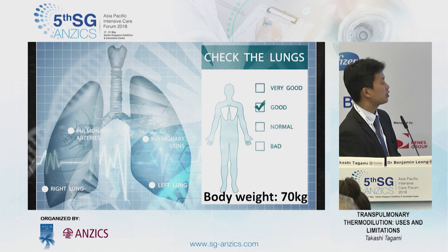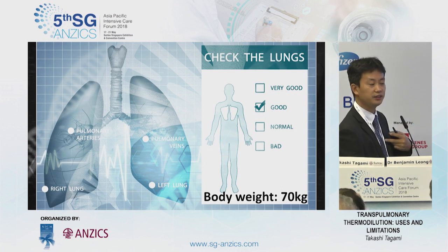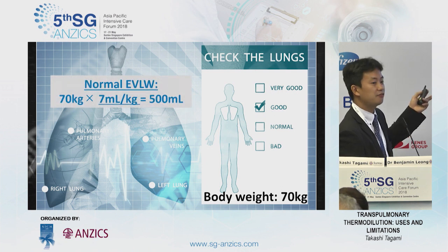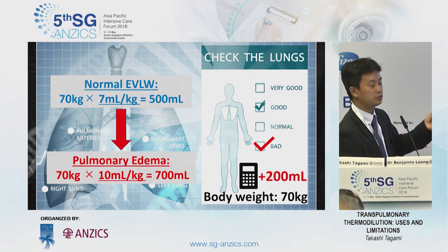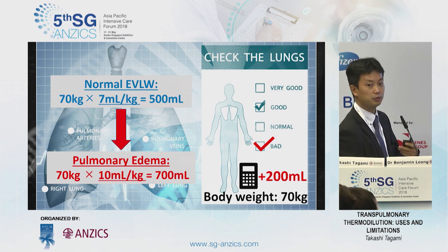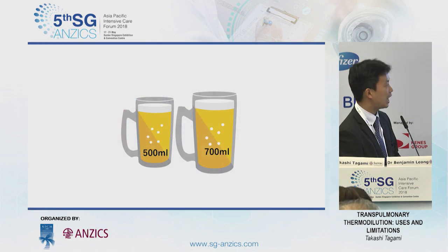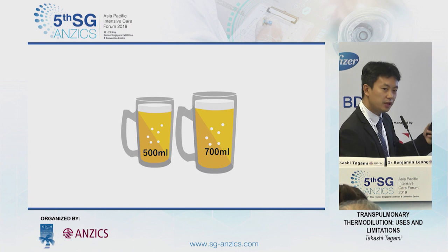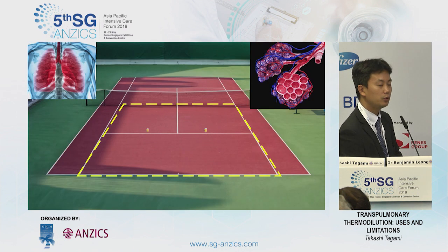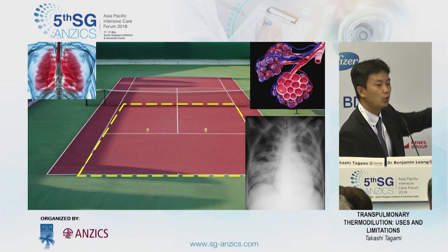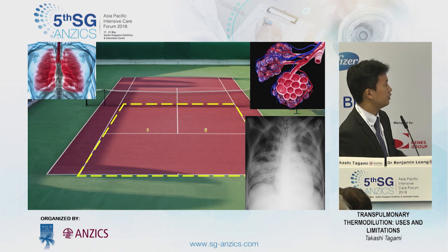How much extravascular lung water do I have as a 41-year-old Japanese man weighing 70 kg? Maybe I have about 500 mL. However, if my extravascular lung water increases to 700 mL — a 200 mL increase — I will develop pulmonary edema. I'd be happy to take another 200 mL of fluid if it were beer, but I don't want any extra extravascular lung water. The problem is: are we able to detect this 200 mL change in the large space of our lungs using a black-and-white chest X-ray? I believe we cannot evaluate that difference unless we measure it directly.